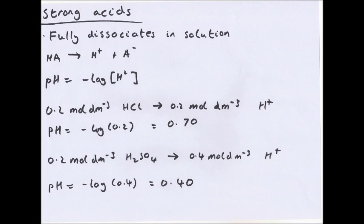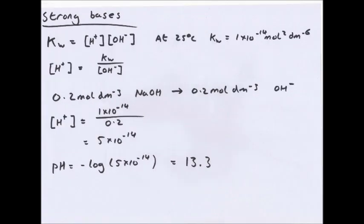For 0.2 mol dm⁻³ of H₂SO₄, it's dibasic so it releases two moles of H+ per mole of H₂SO₄, giving 0.4 mol dm⁻³ of H+. Therefore pH = −log(0.4) = 0.4.